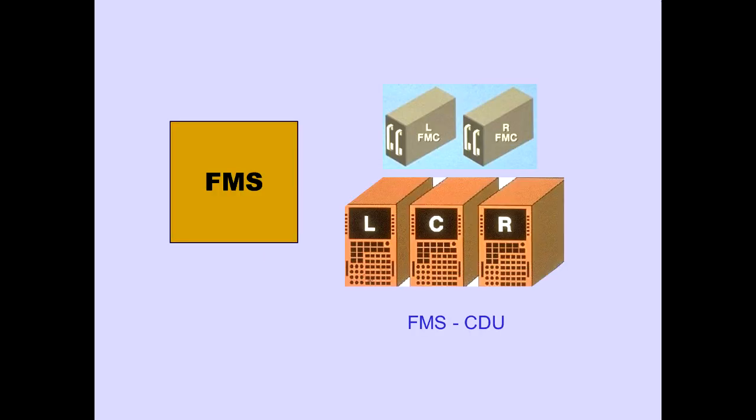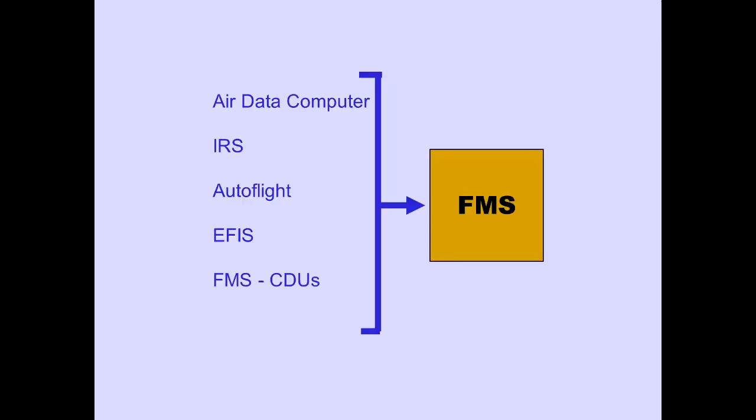The FMS includes two flight management computers and three FMS control display units, or FMS CDUs. The FMS receives information from the air data computers, inertial reference systems, Autoflight, EFIS, and FMS CDUs.